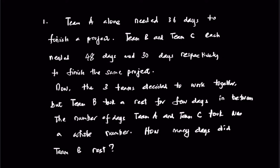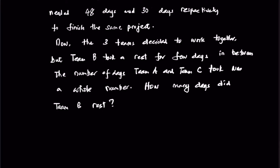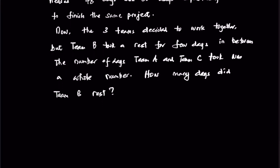Revision for Paper C 2022. Number one: Team A alone needed 36 days to finish a project. Team B and Team C each needed 48 days and 38 days respectively to finish the same project. The three teams decided to work together, but Team B took a rest for a few days in between. The number of days Team A and Team C took was a whole number. How many days did Team B rest?